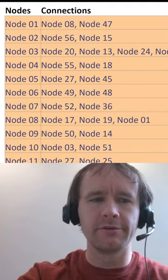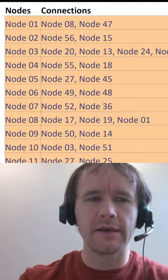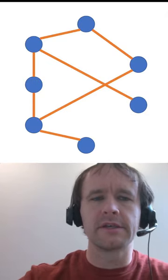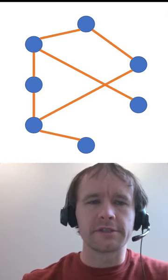What you'll find in there is a list of nodes 1 to 60 just like this and the connections for each one of them. It basically corresponds to a graph just like this and what we're interested in is the distance between nodes.